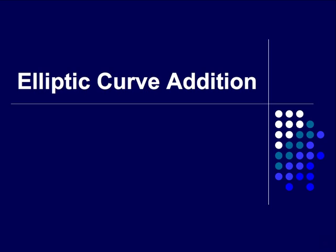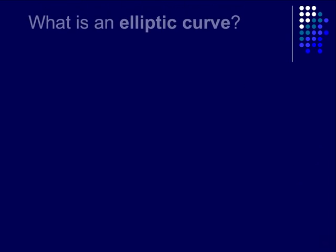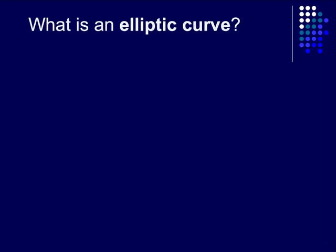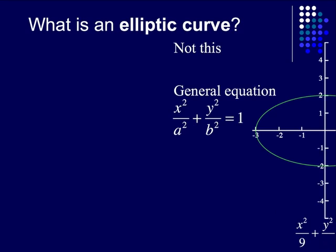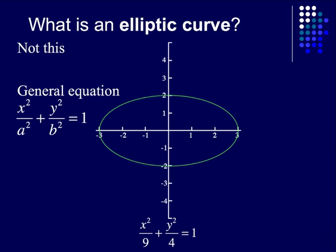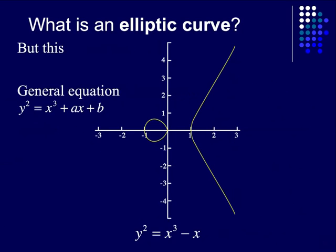This is my presentation on elliptic curve addition. So, what is an elliptic curve? Well, it's not an ellipse, but rather it's this — with the general equation y squared equals x cubed plus ax plus b. The curve you are seeing is that of y squared equals x cubed minus x.